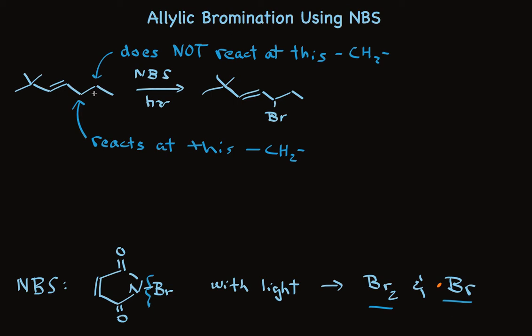In addition to this selectivity, there's another interesting thing about this reaction: it makes a second product. The second product has the double bond shifted over and the bromine at the other end of an allylic system. Putting this selectivity together with the fact that two products result, we can draw a mechanism that makes sense of all this.